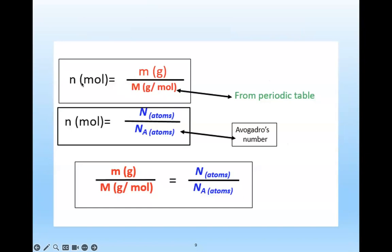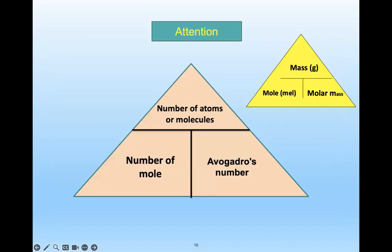From the periodic table: n (moles) equals mass in grams divided by molar mass M. Also, moles equals number of atoms divided by Avogadro's number N_A. Therefore: mass divided by M equals number of atoms divided by N_A. Please remember this pyramid equation — it makes it easy to solve problems for calculating number of atoms, molecules, or moles.